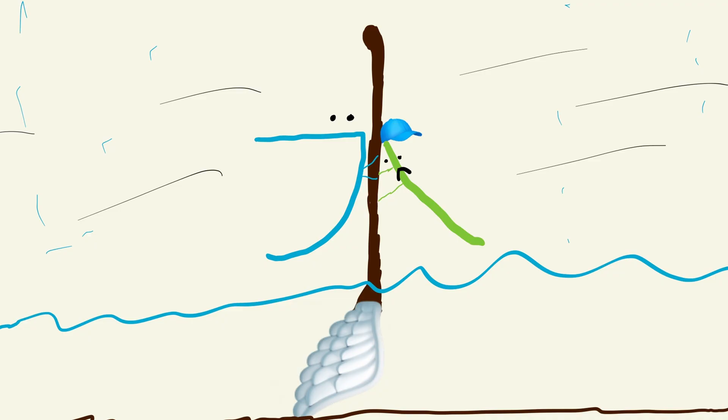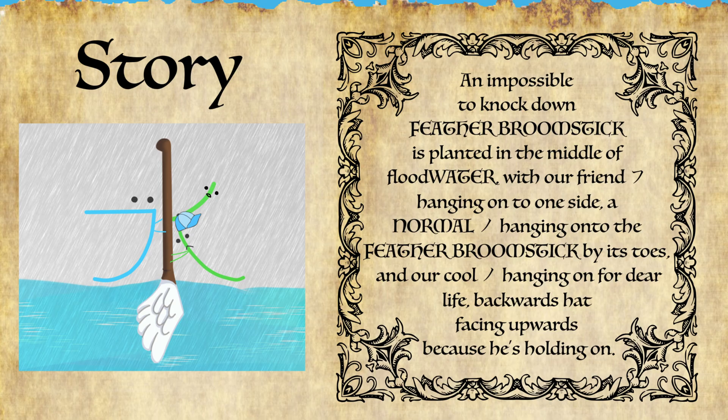Our story for this kanji is: an impossible-to-knock-down feathered broomstick is planted in the middle of floodwater, with our friend fu hanging on to one side, a normal no hanging on to the feathered broomstick by its toes, and our cool no hanging on for dear life. Backwards hat facing upwards because he's holding on and being blown in the wind.